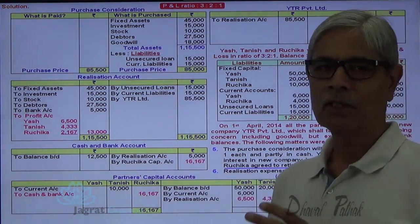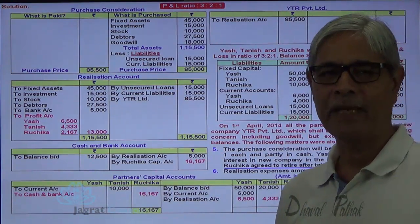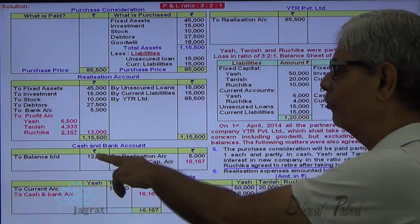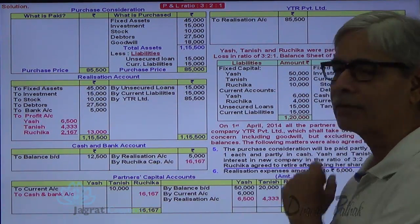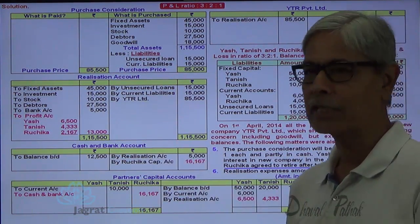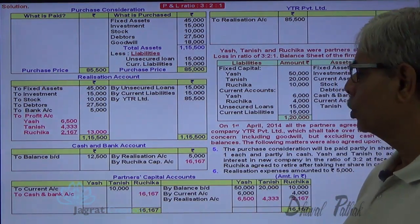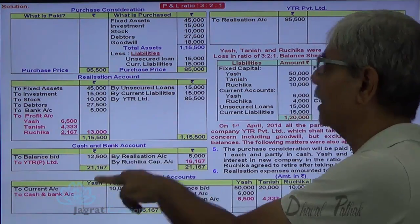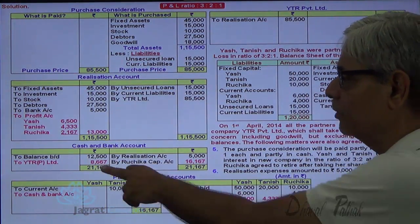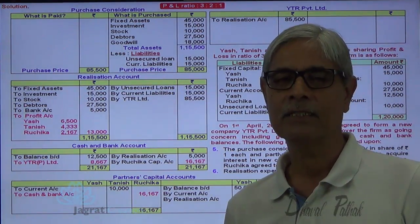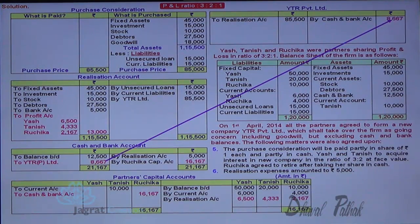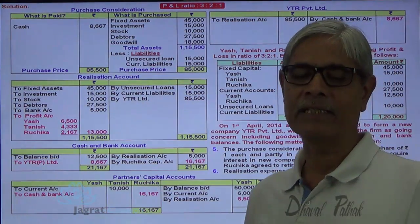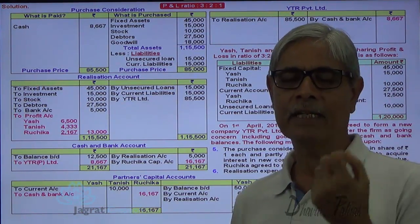I had 12,500 with me; dissolution expenses paid 5,000, so cash balance left is 7,500. From that, I cannot make the full payment of 16,167 to Ruchika. The deficit cash will be received from YTR Limited. Total credits are 21,167 minus 12,500, so cash received from YTR Limited is 8,667. Out of the 85,500 purchase consideration, 8,667 is received in cash, and the remaining consideration is received in the form of equity shares.